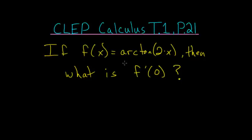If f of x is equal to the arctangent of 2 times x, then what is the derivative of f evaluated at 0?